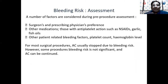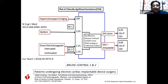The bleeding risk assessment is probably the most important step. Check if the patient is on any additional drugs, what the baseline platelet count is, what the hemoglobin level is, and whether we have a chance to optimize these factors before surgery. Remember that for most surgical procedures anticoagulation is usually stopped due to bleeding risk; however, there are procedures where the bleeding risk is not significant and anticoagulation can be continued.